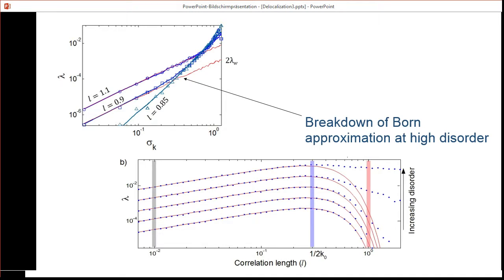We can look at that in more detail and look at the Lyapunov exponent as a function of the disorder strength sigma_k, and we see again that the blue line here is not the same as the red line, and that's because of the breakdown at high disorder. This is the thrust of our paper, where we try to understand what happens also at high disorder.